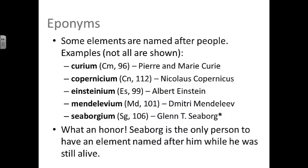Eponyms. What is an eponym? An eponym is anything that is named for a person. Many element names are eponyms because they were named for people, such as Curium, Copernicium, Einsteinium, Mendelevium, and Seaborgium. Although many elements have been named for people, there's only one element that was named for a person while that person was still alive, and that is Seaborgium. Glenn T. Seaborg is the only person to have an element named after him while he was still living.